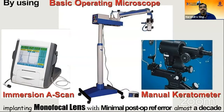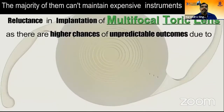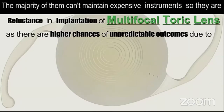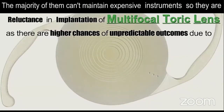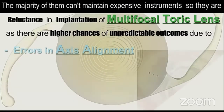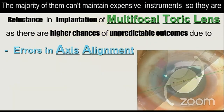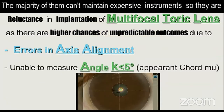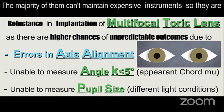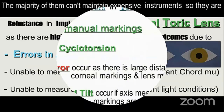By using a basic operating microscope, immersion A-scan, and manual keratometer, surgeons have been implanting monofocal lenses with minimal post-op refractive error for almost a decade. The majority of them cannot maintain expensive instruments, so they are reluctant to implant multifocal toric lenses, as there are higher chances of unpredictable outcomes due to errors in axis alignment, inability to measure angle kappa (which should be less than 5 degrees), and inability to measure pupil size in different light conditions.